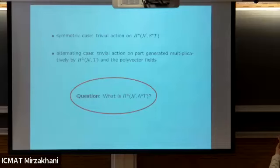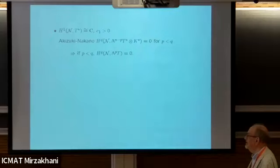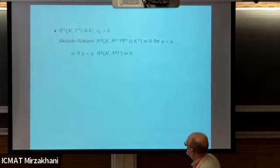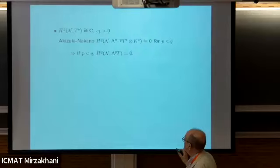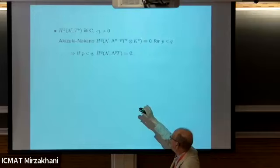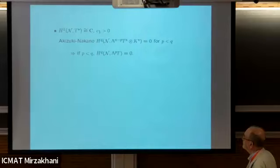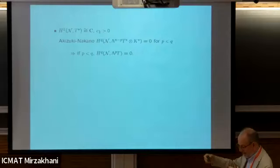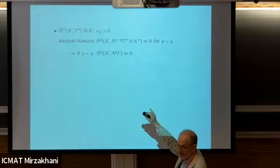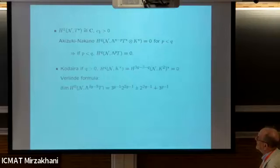Let me say what, as far as I've been able to determine, we know about this cohomology. First of all, this is a Fano manifold - assuming we're in the smooth situation. So the first Chern class is positive, and we can use vanishing theorems and duality to show that when p is less than q, this is equal to zero. H^1 of T is just on the edge of this vanishing. So if we multiply elements in H^1 of T by themselves, we get terms in type (p,p), again just on the edge of vanishing.